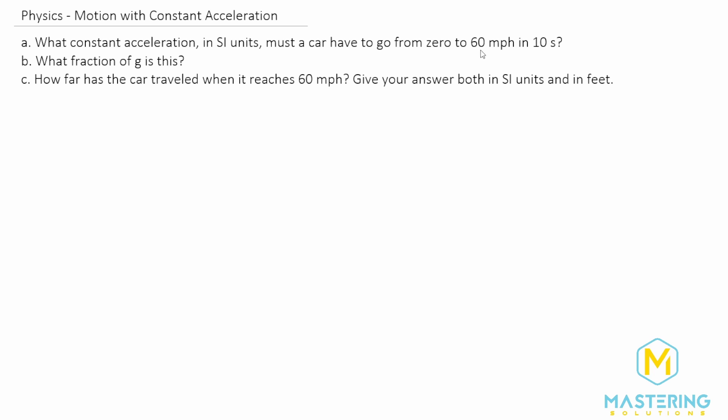They give us 0 to 60 miles per hour, so we need to convert the 60 miles per hour into SI units. To do that we have dimensional analysis. We want miles down here on the bottom so that they cancel out and we want to go into meters.